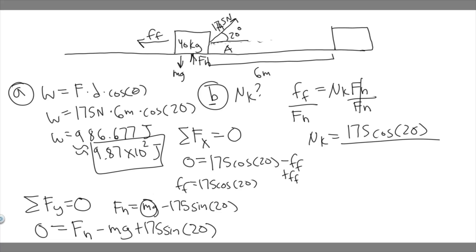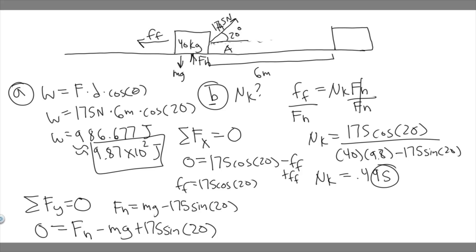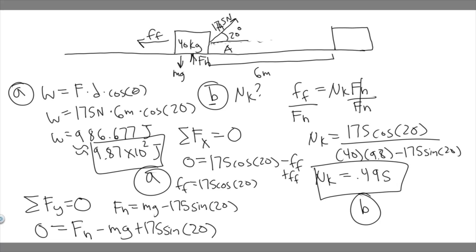Plugging in the values: 175 times cosine of 20, divided by (40 times 9.8 minus 175 times sine of 20). When you calculate this, you get mu sub k equals 0.495. That's your answer to part (b), the coefficient of kinetic friction. And that wraps up both parts of the problem.